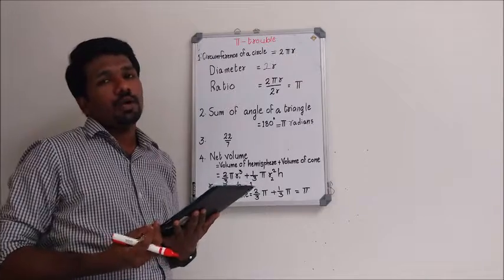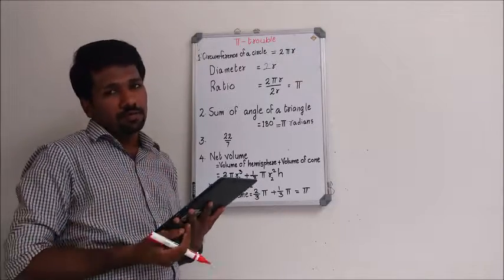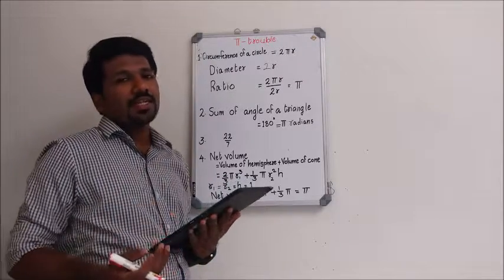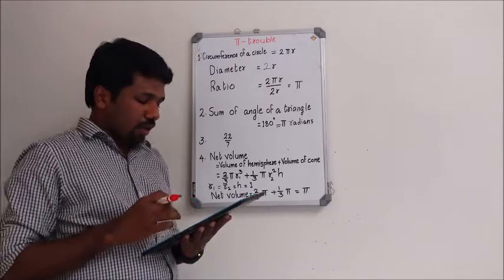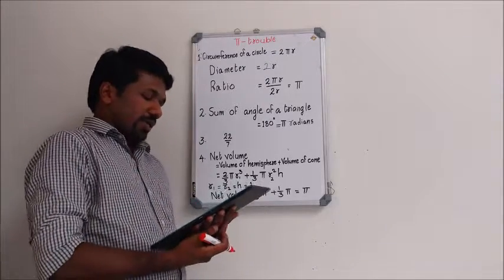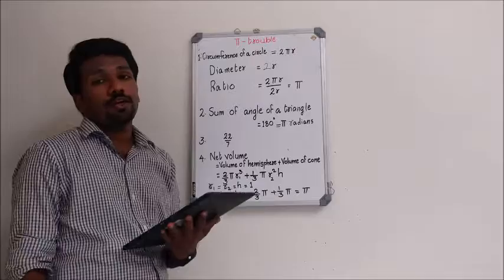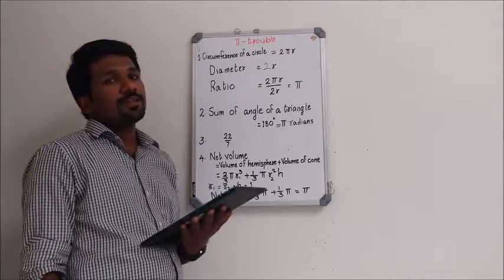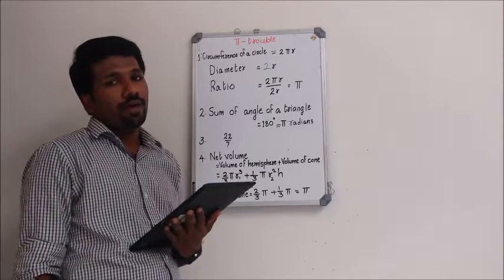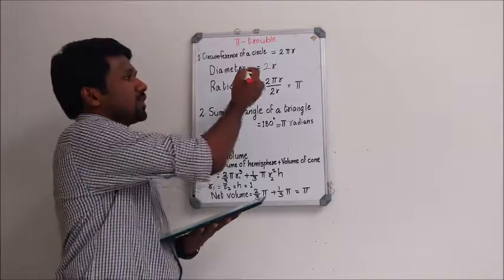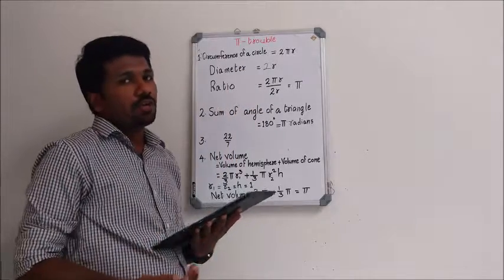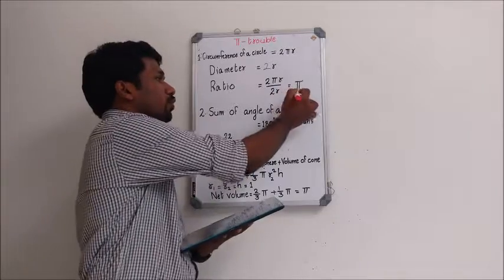Here the question is to find the odd one out among the four given answer options. So let us consider each answer option separately. Considering option 1, the ratio of the circumference of a circle to its diameter. We know that circumference of a circle equals 2πr and diameter equals 2r. Then their ratio will be 2πr/2r = π.